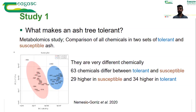The susceptible group has a higher presence of 29 of these chemicals, and the tolerant group has a higher presence of 34 of them. Being tolerant is not only having something that makes you tolerant — it's also not having other things that can make you susceptible.